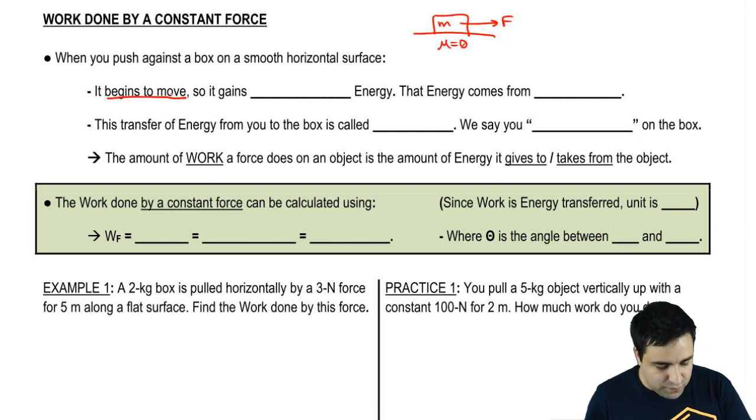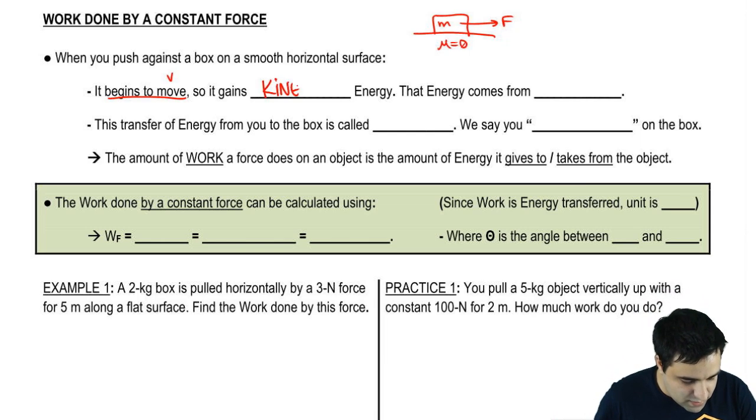Since it begins to move, it now has a v. And if it has a v, it gains kinetic energy. And if you remember, kinetic energy is half mv squared. So if I have a v, I have a kinetic energy.